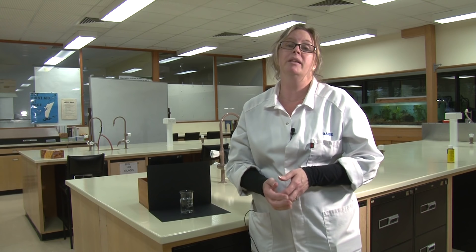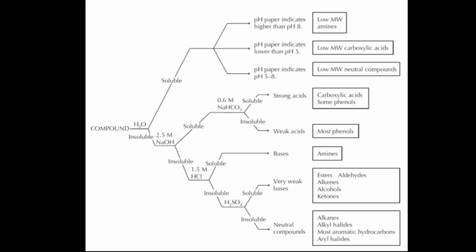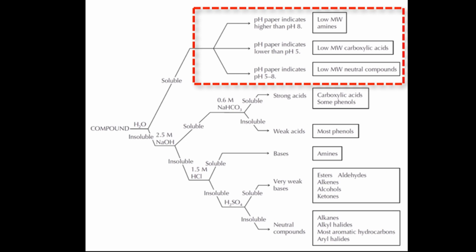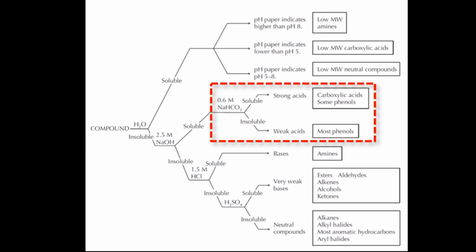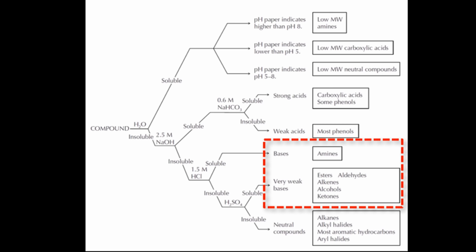The next thing to do is a range of solubility tests. The solubility tests will tell you a little bit more about which functional groups are present in your compound. If you have very polar functional groups like alcohols or amines, they'll be soluble in water. If you have acids, they'll be soluble in bases, and if you have bases, they'll be soluble in acids.